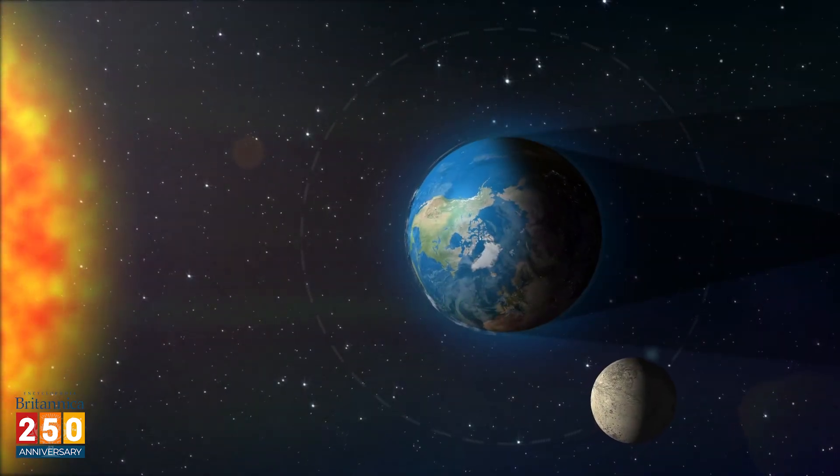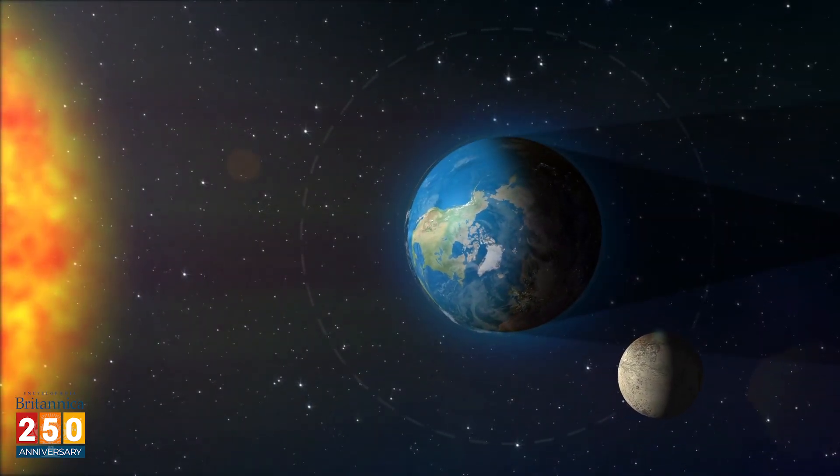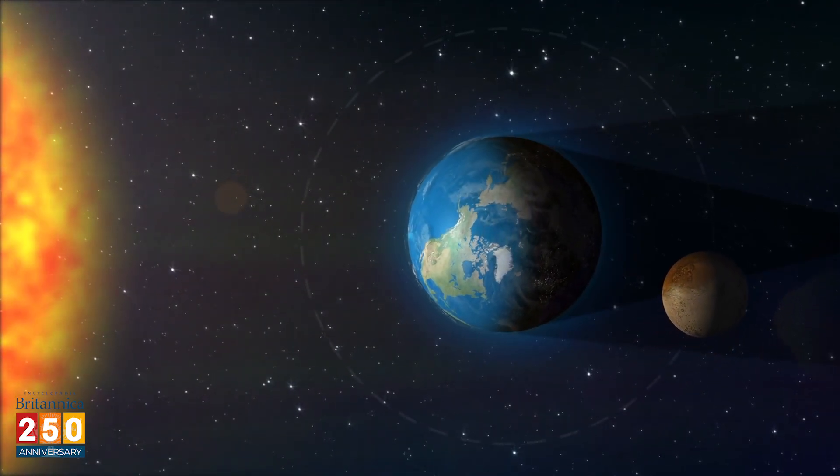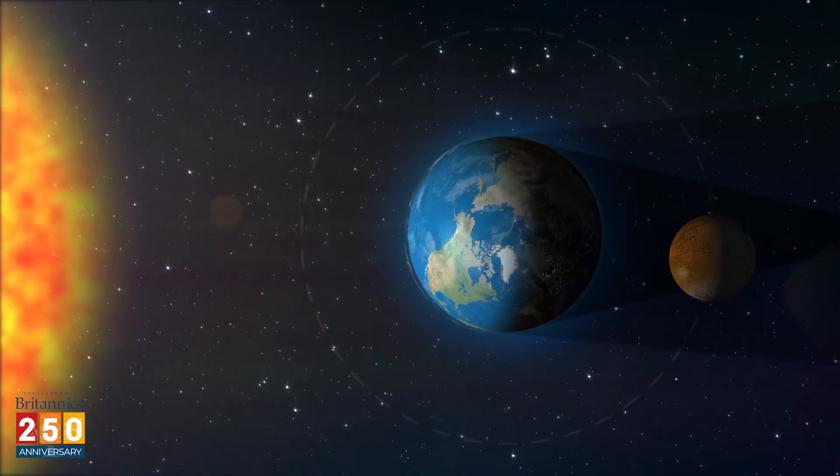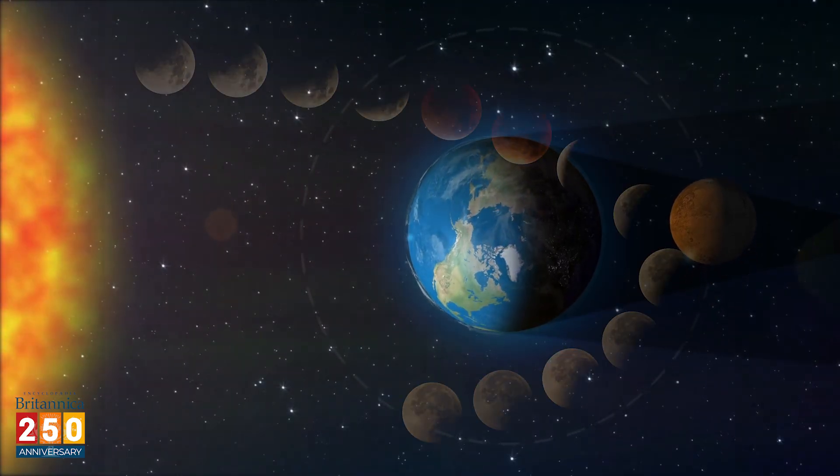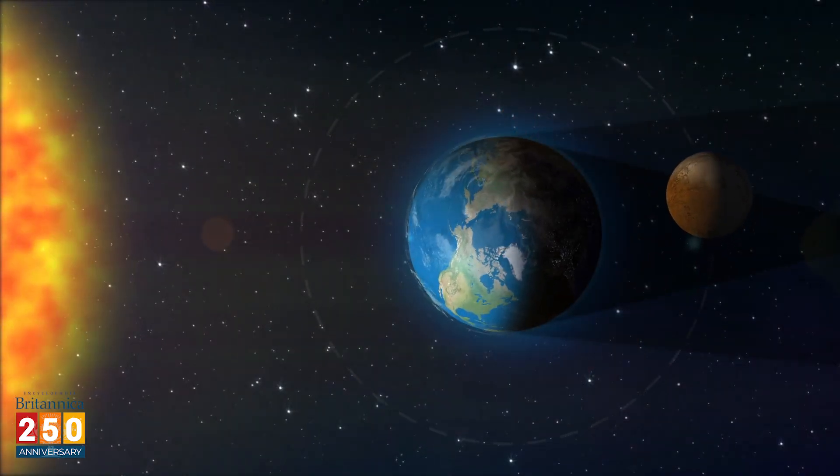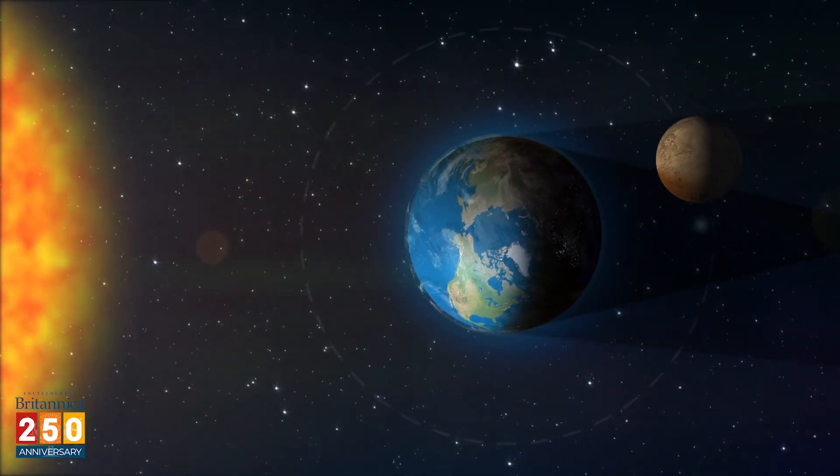On the other hand, when a total lunar eclipse occurs, where you are on Earth doesn't make much difference. The Earth is so much bigger than the Moon that you'll be able to see a total lunar eclipse anywhere on the night side of the Earth while it's happening. But you can still get a partial lunar eclipse. Sometimes the Moon passes along the edge of the Earth's shadow, a dim area called the penumbra.